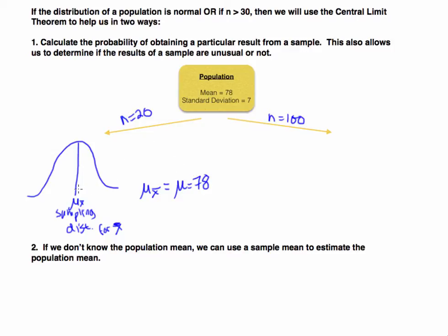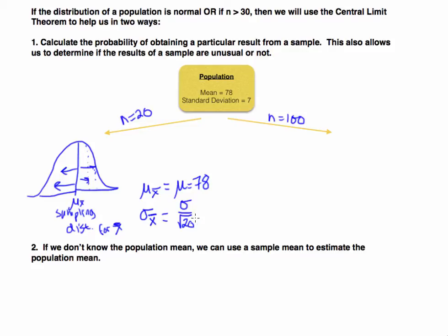Given the central limit theorem, the standard deviation associated with the sampling distribution — the standard error — is calculated by taking the population standard deviation and dividing it by the square root of the sample size. So sigma sub x-bar is the standard deviation of the sample means. Plugging in: 7 divided by the square root of 20 gives approximately 1.57. So if the population standard deviation is 7 and we take samples of size 20, the distribution of means has a standard deviation of 1.57.